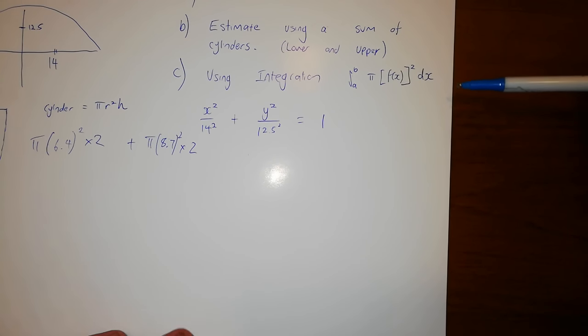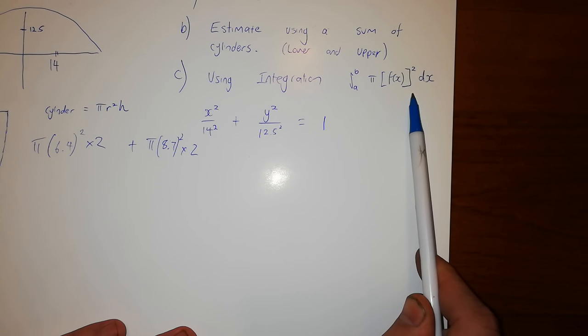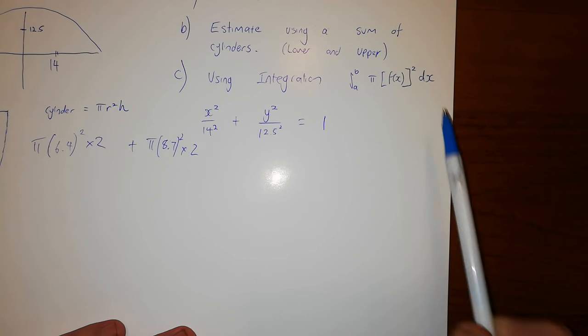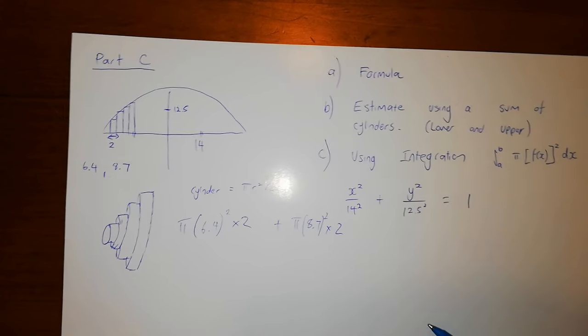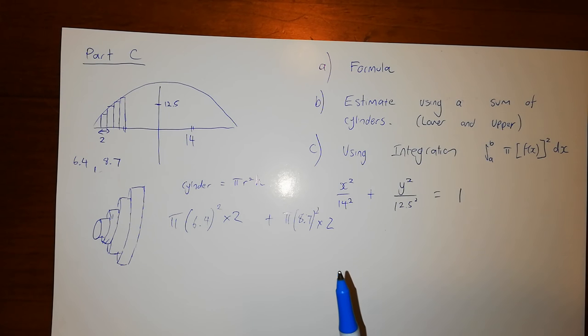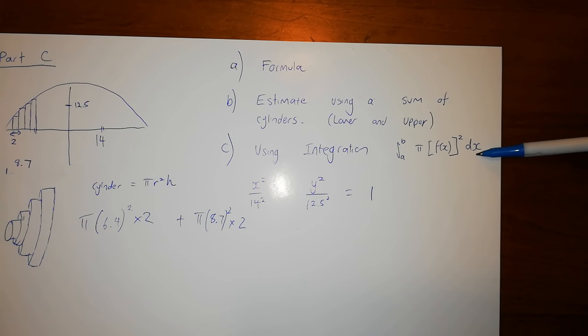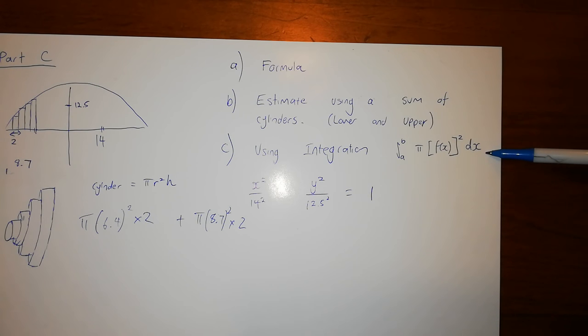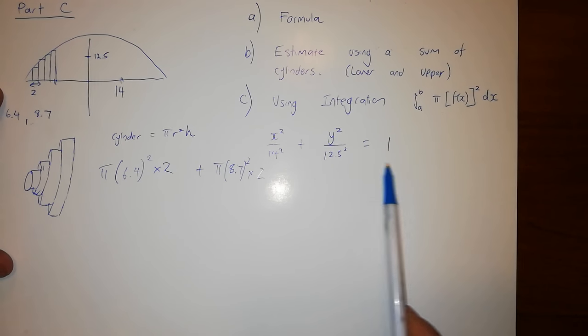The last process we do is using integration. So this is the formula we've been using here. We've discovered this or we're testing this conjecture. Now the integral from a to b of π times f(x) squared is the volume of that shape when we rotate that function around the x-axis. So what we're doing here with the ellipsoid is we're thinking about rotating it around the x-axis, and we're going to see if this value we get using this is equal to the value we got from the formula. We know this is correct. We're testing if this is correct. That's our conjecture.